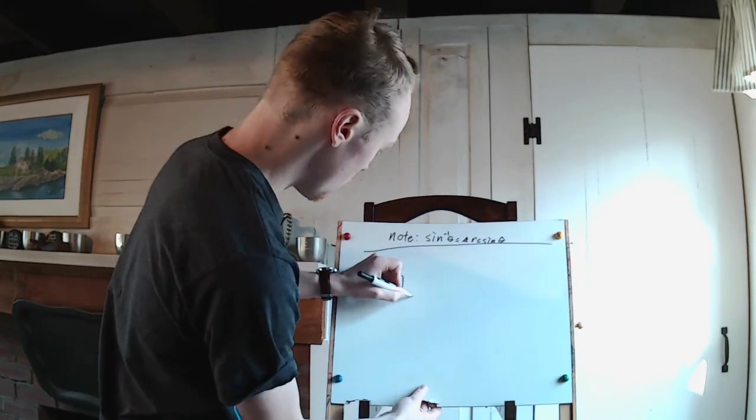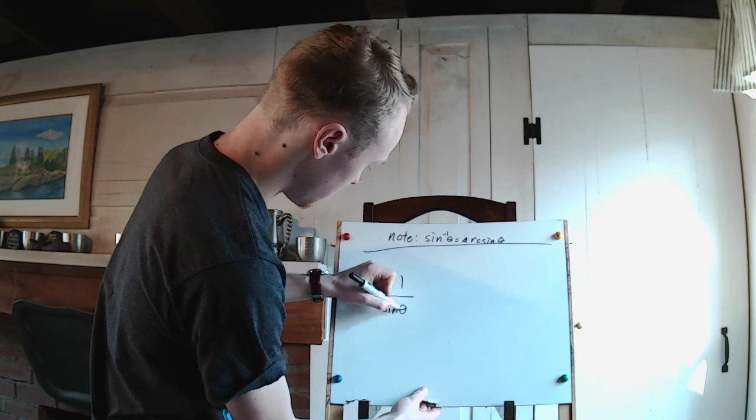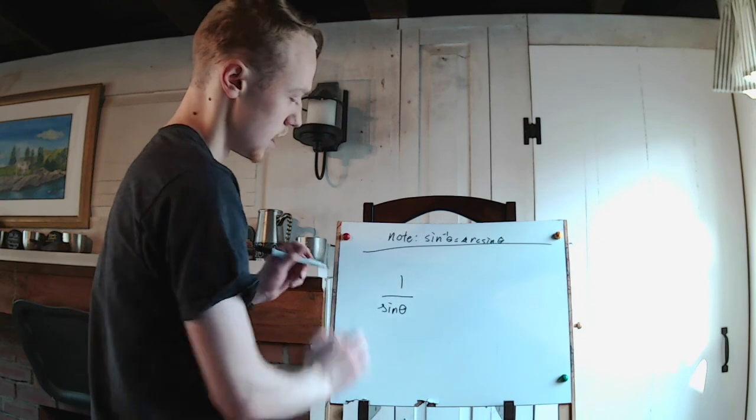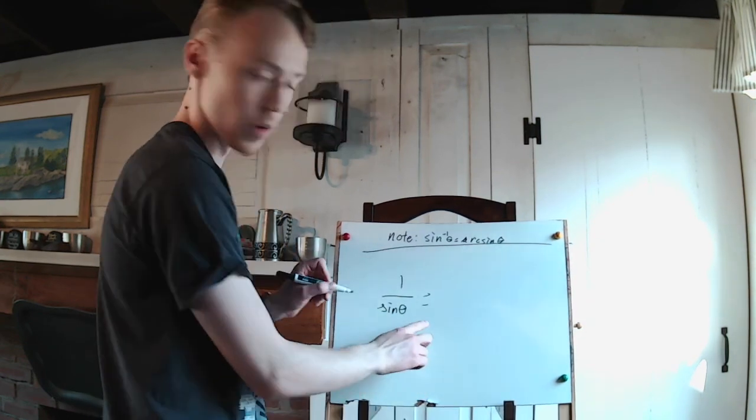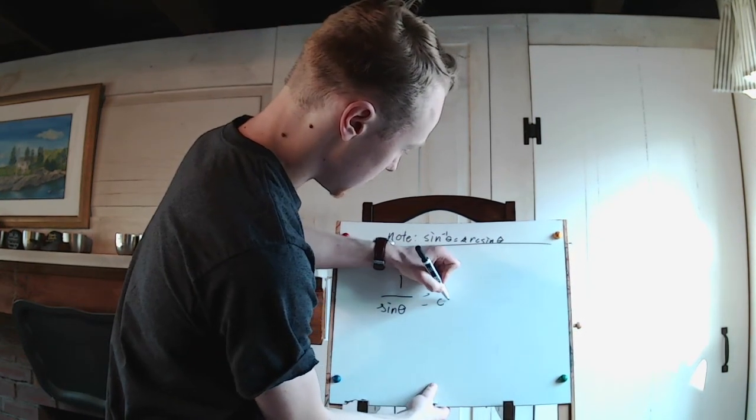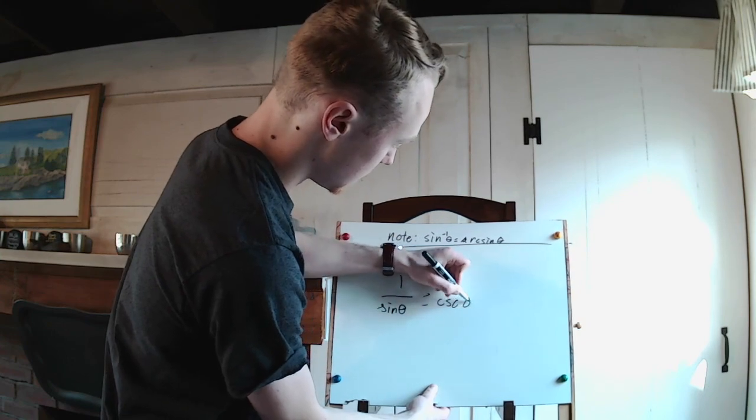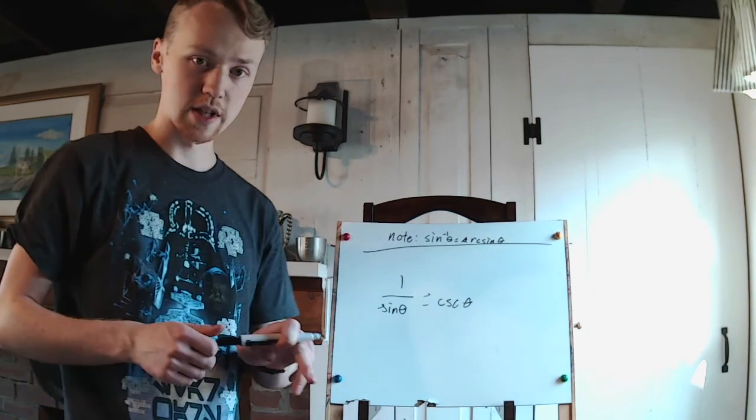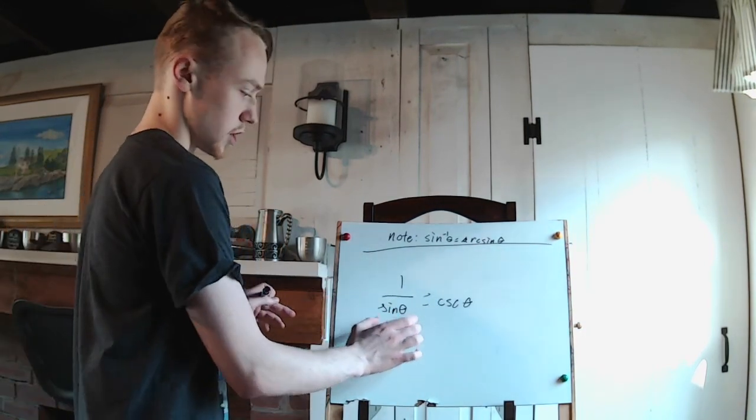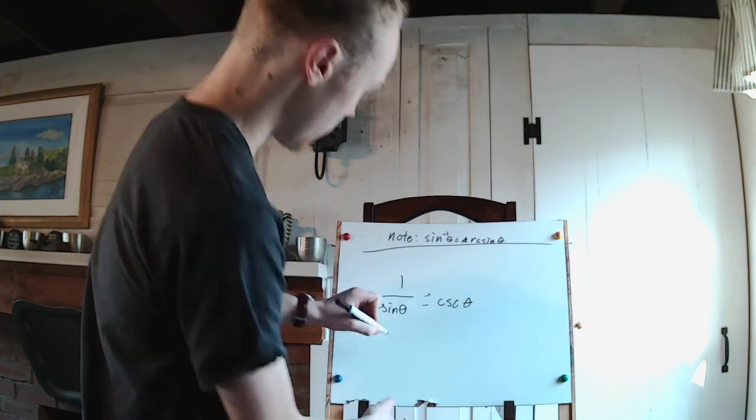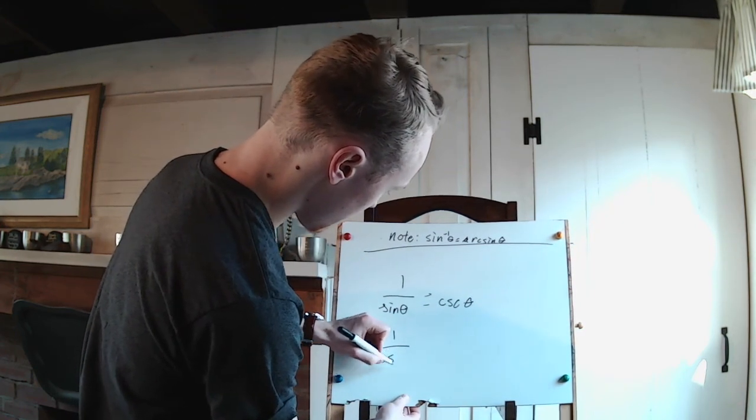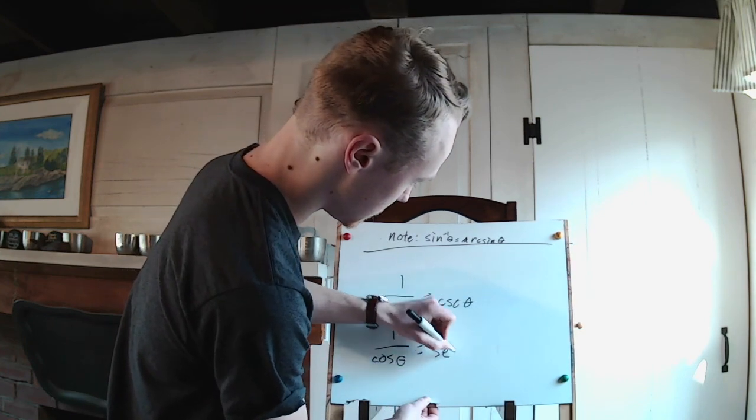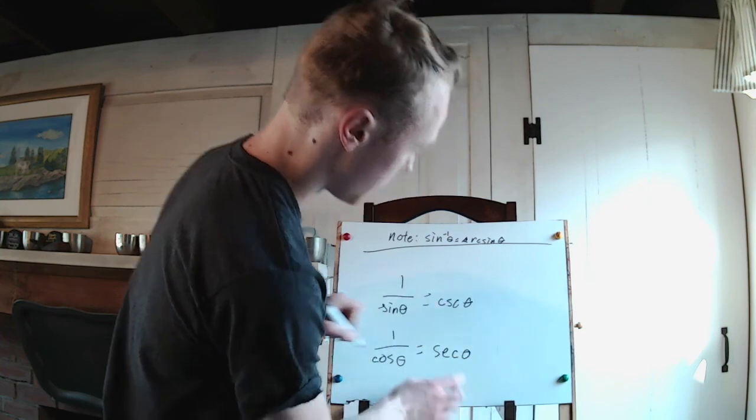Now we need to cover one more thing. We need to understand that one over sine, if it's not the inverse of the sine, then what is this exactly? This is what we could say is equal to cosecant. We can write it as csc theta. Cosecant is its own function, defined as one over the sine of theta. This is its own function. We have the other function, so one over cosine theta is going to be equal to the secant, sec of theta.